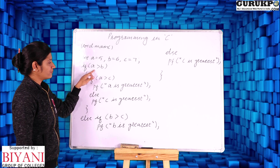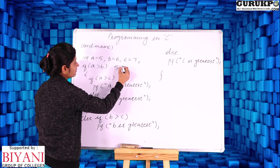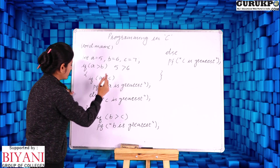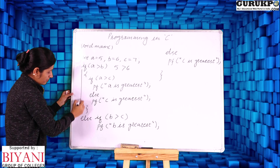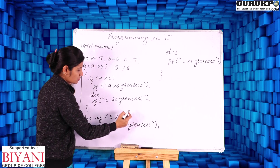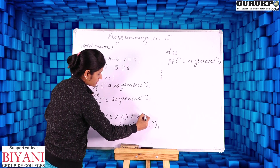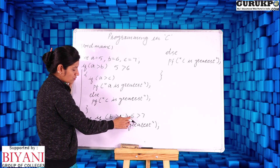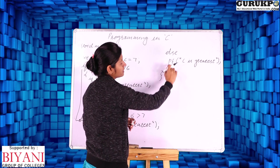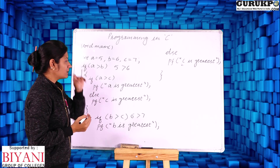First we check if a is greater than b. The value of a is 5 and b is 6 — 5 greater than 6 is false. So we come to the else part and check whether b is greater than c. The value of b is 6 and c is 7 — 6 greater than 7 is also false. So we go to the else part of this if, and it prints: c is greatest, which is correct in this case.